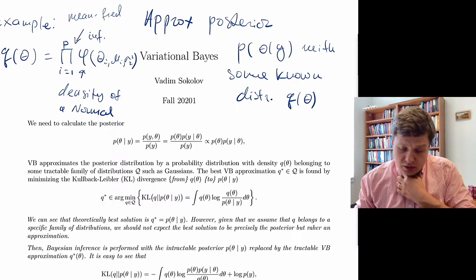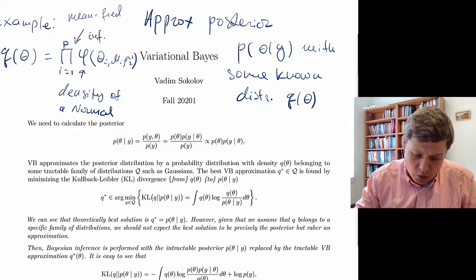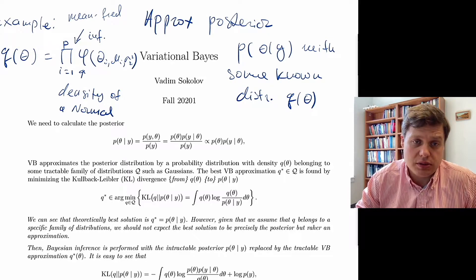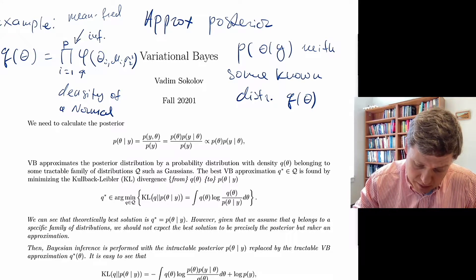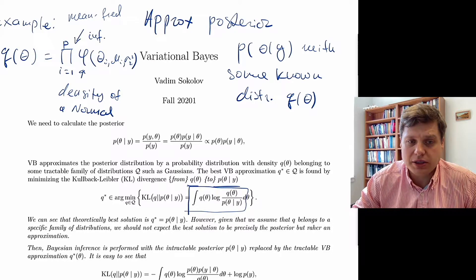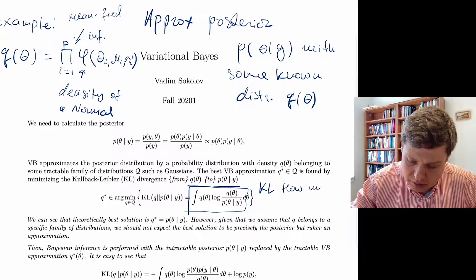Let's look at how we're going to find this density function Q. We want Q to be as close as possible to the posterior, and we're going to measure this closeness using Kullback-Leibler divergence. We measure the KL divergence from Q to the posterior, and then we minimize this KL divergence. The KL divergence measures how much Q misrepresents p(θ | y), the posterior.